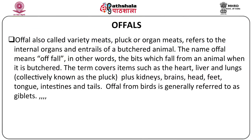Offal is also part of meat. When I say offal, I am referring to the pluck or organ meats or the internal organs or the entrails of a butchered animal. The name offal means 'of fall' — in other words, the bits which fall off from an animal when it is butchered. The term offal covers items such as the heart, liver and lungs collectively known as the pluck, plus the kidneys, brains, head, feet, tongue, intestine and liver tails. Offal from birds is generally referred to as giblets.